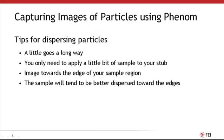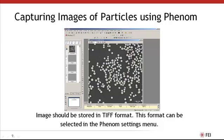Now that you've seen what a well-dispersed particle sample looks like, here are a few tips for how to prep the sample yourself. First, remember a little bit goes a long way — you need only apply a little bit of the sample to your stub. When you're done loading your sample into the Phenom, collect images towards the edge of your sample region, as the sample will tend to be better dispersed towards the edges. All images should be stored in TIFF format by going to the Settings menu on the Phenom User Interface and pressing the TIFF button near the bottom left-hand corner.